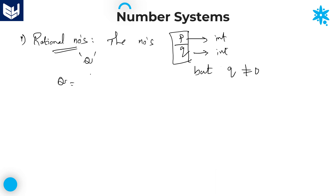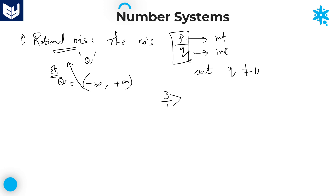For example, if you take any integer value, all integer values are rational numbers. Suppose you take the number 3 — we can write it as 3 by 1. Both numerator and denominator are integers and the denominator is not equal to 0, so it satisfies all conditions of a rational number. Therefore, 3 is a rational number. Numbers like 7 by 9 and 8 by 17 are also rational numbers.